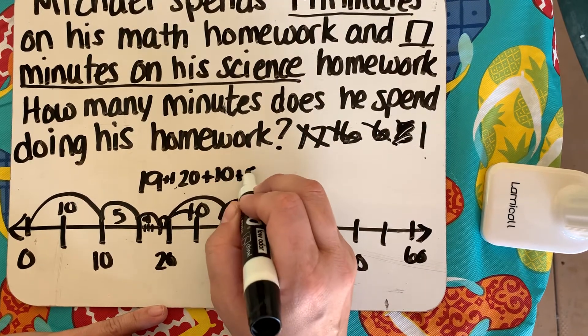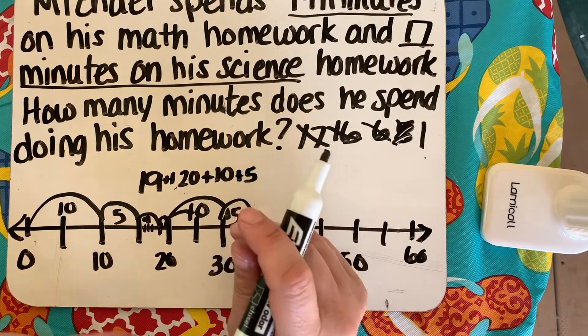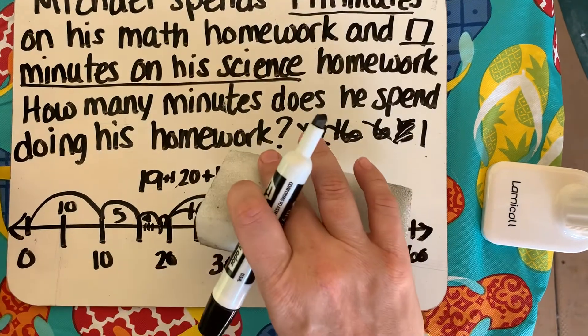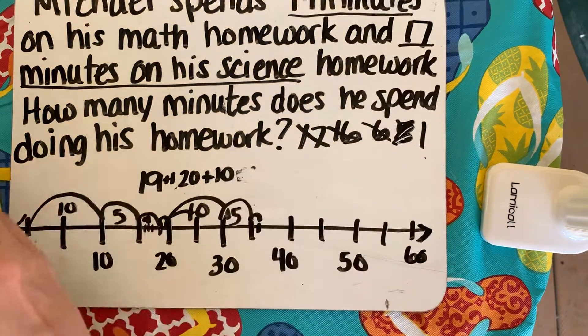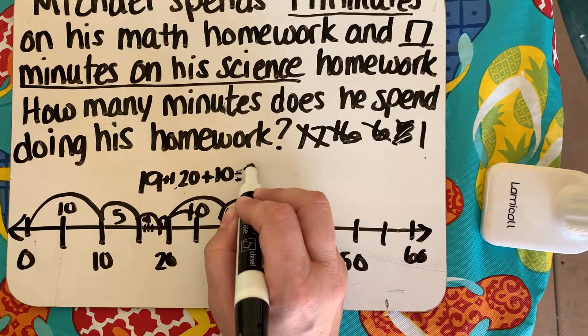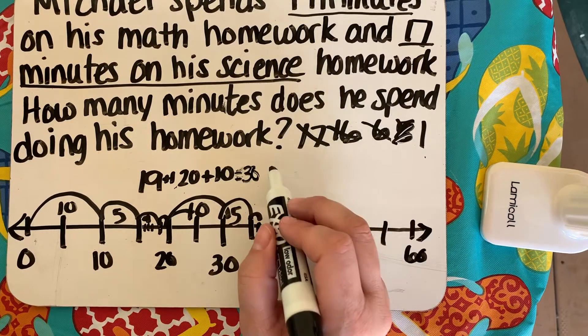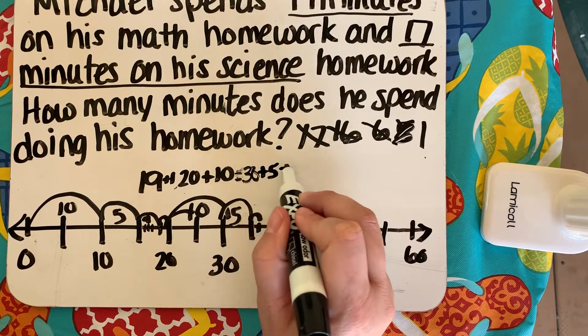So plus 5, I need to back it up a little bit. So I'm gonna do that quite right. Equals 30 plus 5 equals 35.